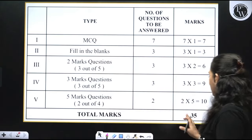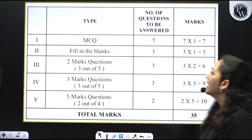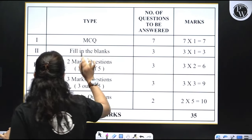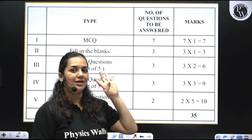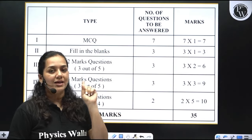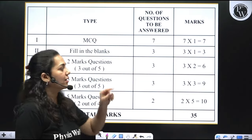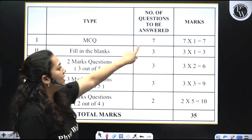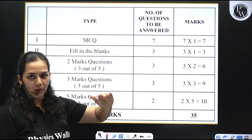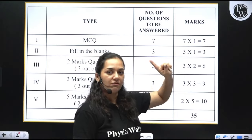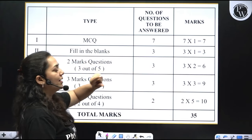So if you can see, total marks is going to be 35. Multiple choice questions: one question, four options, of which you have to choose the right option. Each question carries one mark. There are 7 questions, so you will get 7 marks.